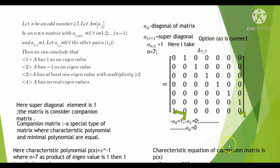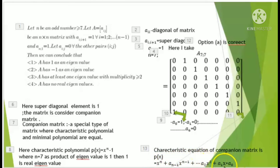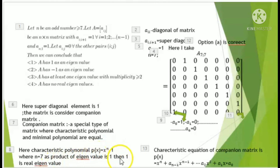The characteristic polynomial of the companion matrix is x^n minus a(n-1) times x^(n-1) minus ... minus a_1 times x minus a_0. So with x^7 minus 1, the product of eigenvalues is one, confirming one is an eigenvalue.